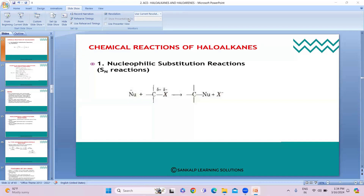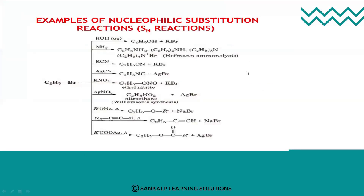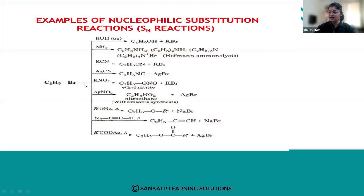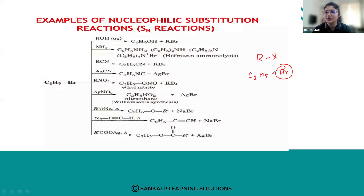Today we are going to see different examples of nucleophilic substitution reactions. The starting material taken is ethyl bromide, where bromide is the leaving group. This is an alkyl halide, and we are going to perform a substitution on it. We need a nucleophile — and these nucleophiles are generated by using different reagents.